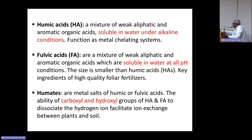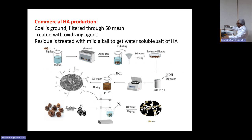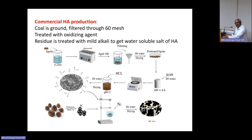The third component, humin, consists of metal salts of humic and fulvic acids. The carboxyl and hydroxyl functional groups in humic and fulvic acids determine the cation exchange capacity, which ultimately governs the supply of nutrients to plant roots. Industry has been producing humic acid commercially using sources like lignite, and this involves a mining process, though it comes at an economic cost.